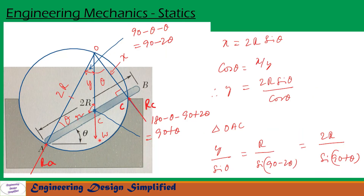First let us see forces and reactions. The weight of the bar AB will be acting from the center of the bar vertically downwards, and weight is W as shown. At end A, reaction RA acts in the direction shown, and its line of action passes through the center of the circle drawn over the hemispherical bowl. Another reaction RC at point C acts perpendicular to bar AB. The lines extended from RC, W, and RA must all meet at point O for equilibrium.